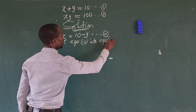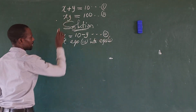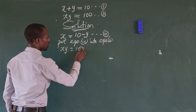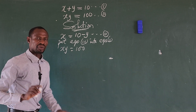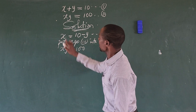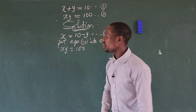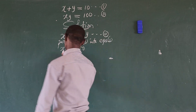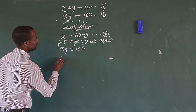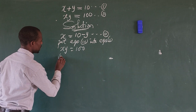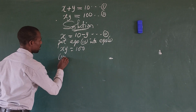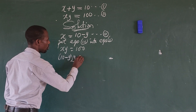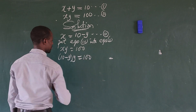We substitute into equation two, which is xy equals 100. Wherever we see x, we put in 10 minus y, so this gives us the bracket 10 minus y, close bracket, multiplied by y, equals 100.